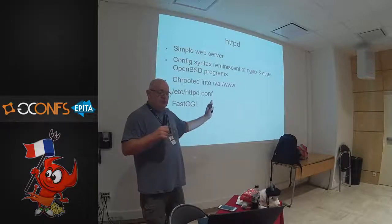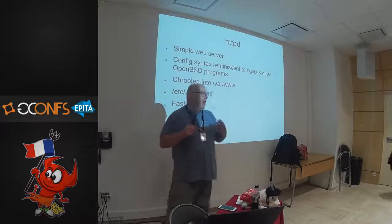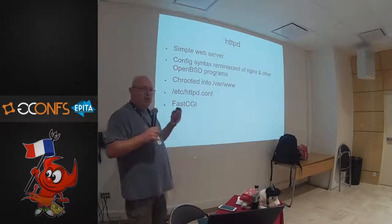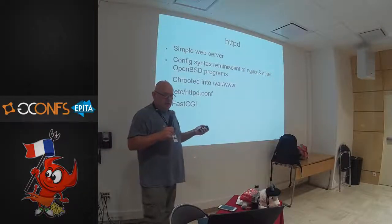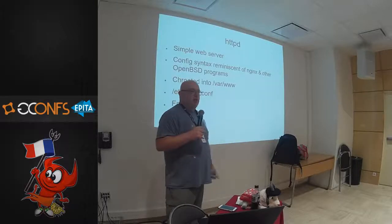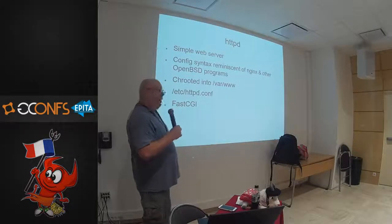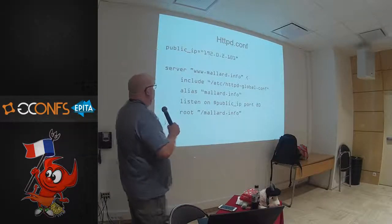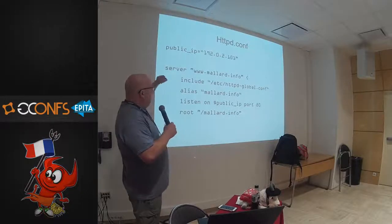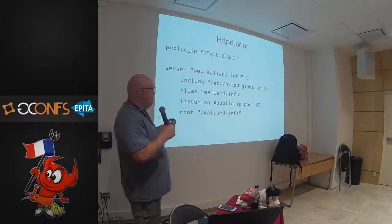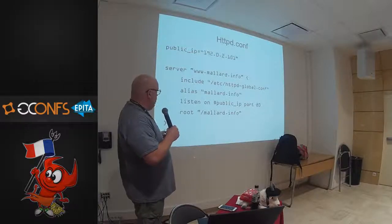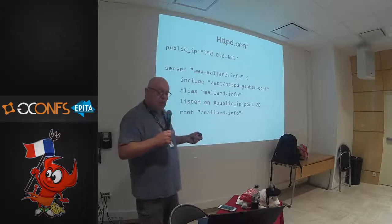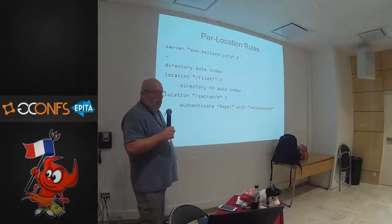HTTPD is a simple web server. The config syntax is reminiscent of NGINX and looks like pretty much every other OpenBSD server config. It runs privilege separation, chrooted into /var/www. You configure it in /etc/httpd.conf and dynamic content comes through FastCGI integration. You set a macro, define a server — all servers are virtual servers — you can include a file, have web aliases, listen on port 80, and set a root directory inside the chroot.